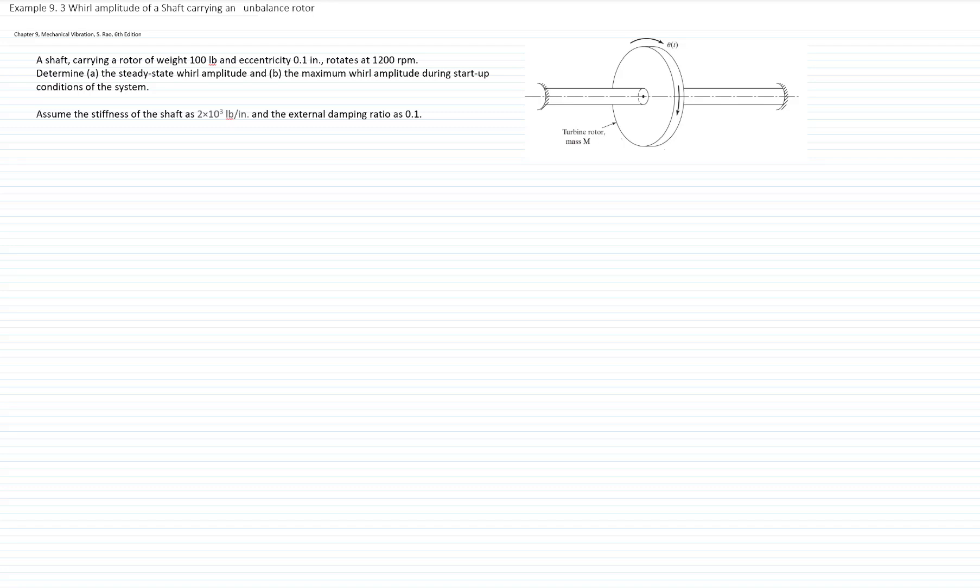We have a shaft carrying a rotor of weight 100 pounds and the eccentricity is 0.1 inch. The eccentricity means that the center of mass of the rotor is 0.1 inches from the geometrical center of the rotor. It rotates at 1200 RPM. We would like to determine the steady state weld amplitude and the maximum weld amplitude during the start-off condition of the system. We will assume the stiffness of the shaft as 2 times 10 to the third pounds per inch, and we will have an external damping ratio of 0.1.